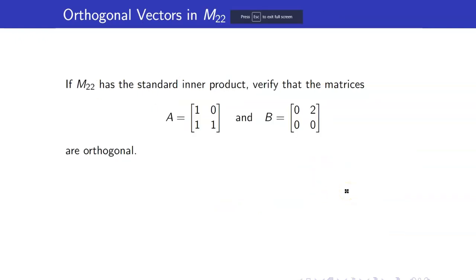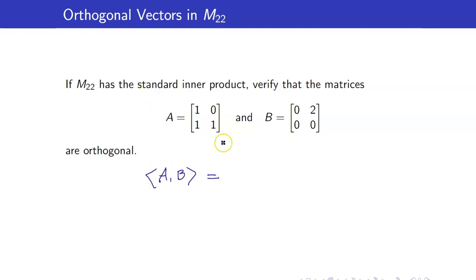Let us show that these two matrices here are orthogonal using the standard inner product in M22. This inner product is just equal to the sum of the products of the components: 1 times 0 plus 0 times 2 plus 1 times 0 plus 1 times 0, which is really equal to 0.